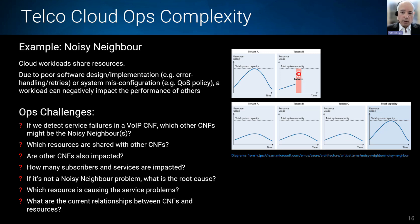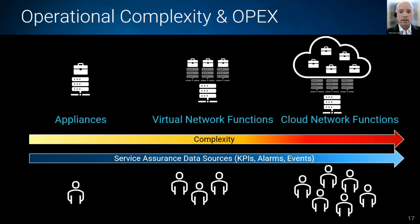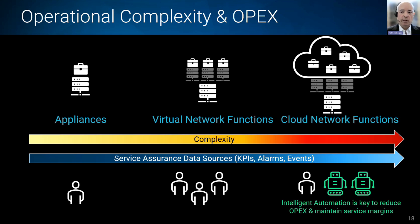The inherent complexity of the cloud — all those additional layers of abstraction — gives us the challenge to reliably operate those services. To address that, we could add lots of people to our operations team to look at all those new dashboards, new data sources, and perform correlations between the different problems we're seeing. But that's not going to fly, because operations teams don't have an unlimited budget. The answer, of course, is automation. We need to use intelligent automation to replace that small army of experts needed to make sense of all the data, complexity, abstraction and virtualization.